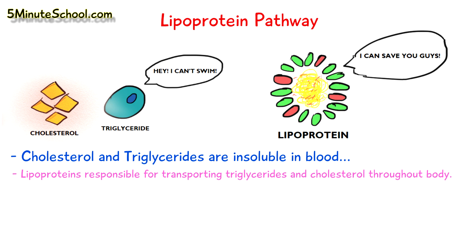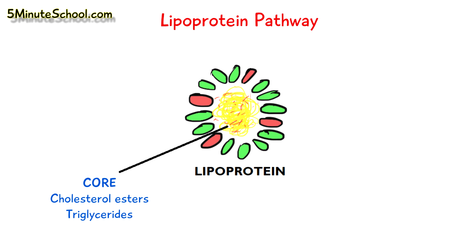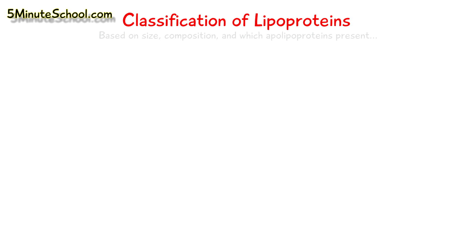They're arranged so that the core of the lipoprotein contains the cholesterol esters and the triglycerides, and they're surrounded by free cholesterol, phospholipids, and apolipoproteins. We can classify lipoproteins into seven different forms, and that's based on their size, composition, and which apolipoproteins are present.